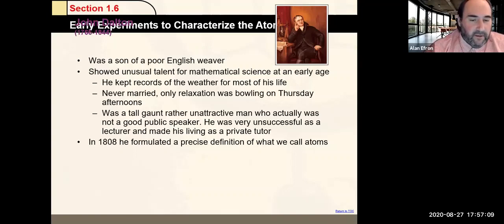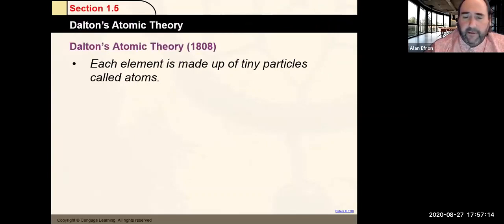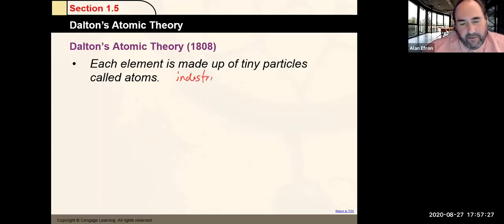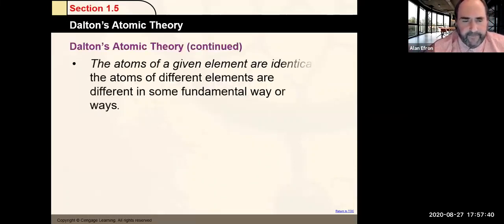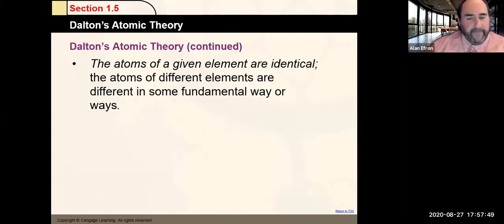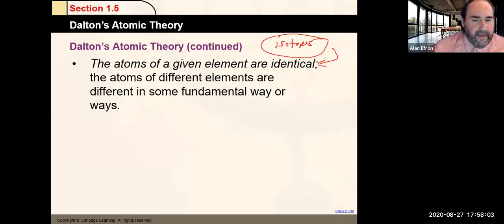Parts of Dalton's atomic theory: he thought each element was made up of tiny indestructible particles called atoms — the indestructible part is not necessarily correct. He said atoms of a given element are identical and atoms of different elements are different — this is also not 100% correct due to the existence of isotopes. Isotopes are the same element but with different masses, meaning different numbers of neutrons.